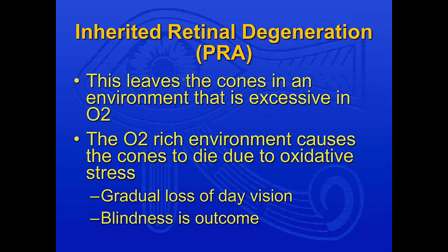The ratio of rods to cones is 20 to 1 in the dog retina. If all the rods are dying, you're left with sparse cones — except in the area centralis where they're rich — and that excess amount of oxygen becomes very toxic to the cones. So dogs go blind from PRA at night due to the rod mutation, and in the daytime because the cones are subject to excessive oxygen and they die off as well.